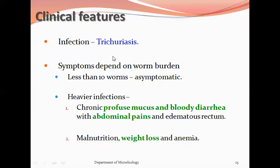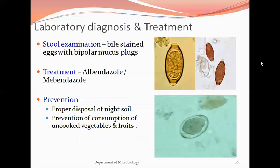Trichuris trichura causes trichuriasis. Symptoms depend on worm burden. Fewer than 10 worms results in asymptomatic infection. Heavier infections cause chronic profuse mucous and bloody diarrhea with abdominal pain and edematous rectum, and may also lead to malnutrition, weight loss, and anemia. For lab diagnosis, stool is collected and a wet mount is examined for bile-stained eggs with bipolar mucus plugs. For treatment, albendazole and mebendazole can be used. For prevention, proper disposal of night soil is necessary and consumption of uncooked vegetables and fruits should be avoided; if consuming salads, fruits and vegetables should be thoroughly washed.